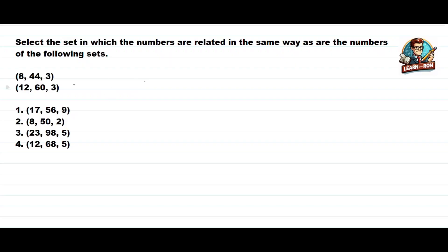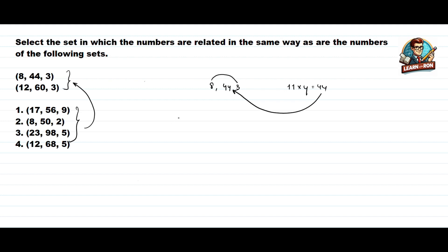Hi everyone. Let's see the first question. They have given two sets and we need to find the set from the given options which follows the same pattern. Let's find the pattern. Taking the first set: 8, 44, and 3. If I add the first and third number: 8 plus 3 is 11, and if I multiply with 4, I get 44, which is the second number. Let's check the second set: 12 plus 3 is 15, and multiplying with 4 gives 60, which is the second number.